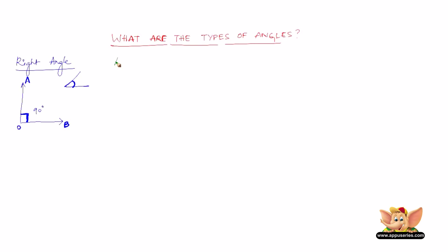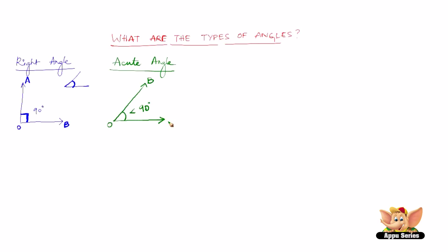Let us look at another type of angle which is called the acute angle. An acute angle is an angle whose measure is greater than 0 degrees but less than 90 degrees. We can name it BOC, so angle BOC is less than 90 degrees and greater than 0 degrees. This is called an acute angle. Defining acute angle: an acute angle is any angle whose measurement is greater than 0 degrees but less than 90 degrees.